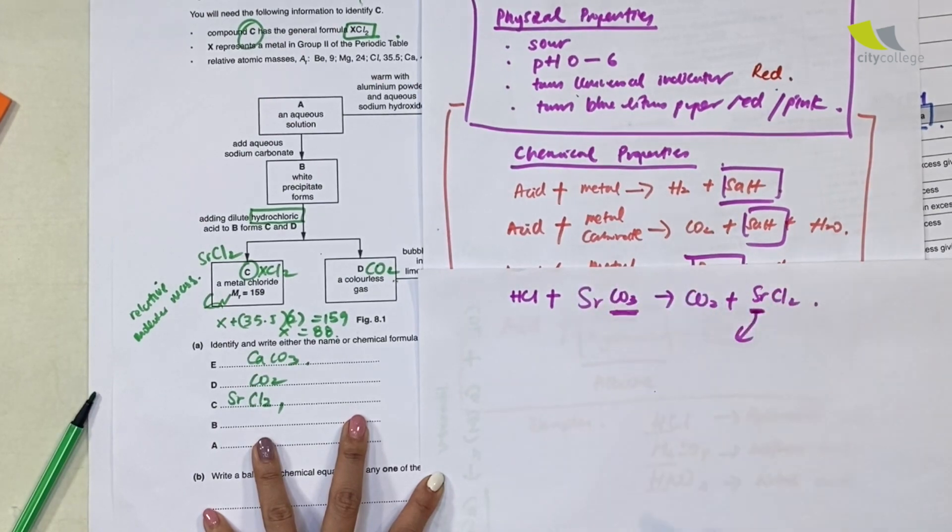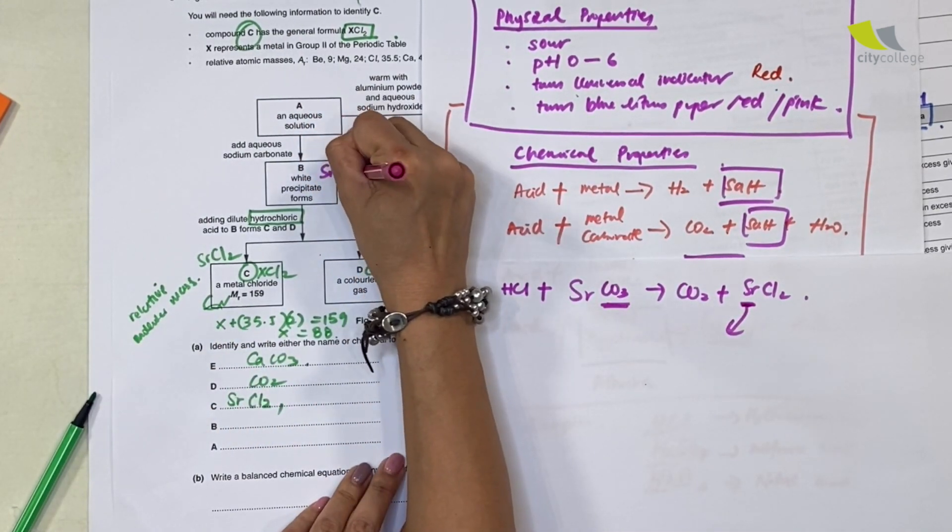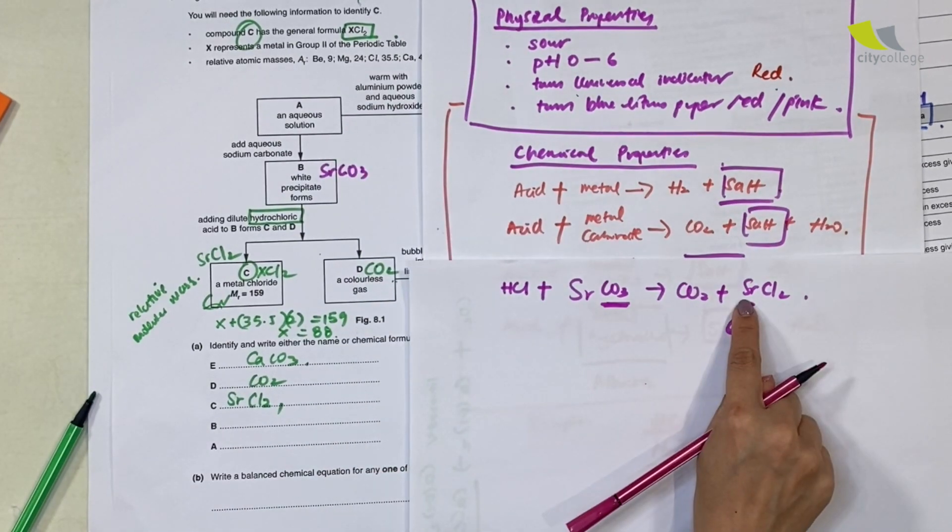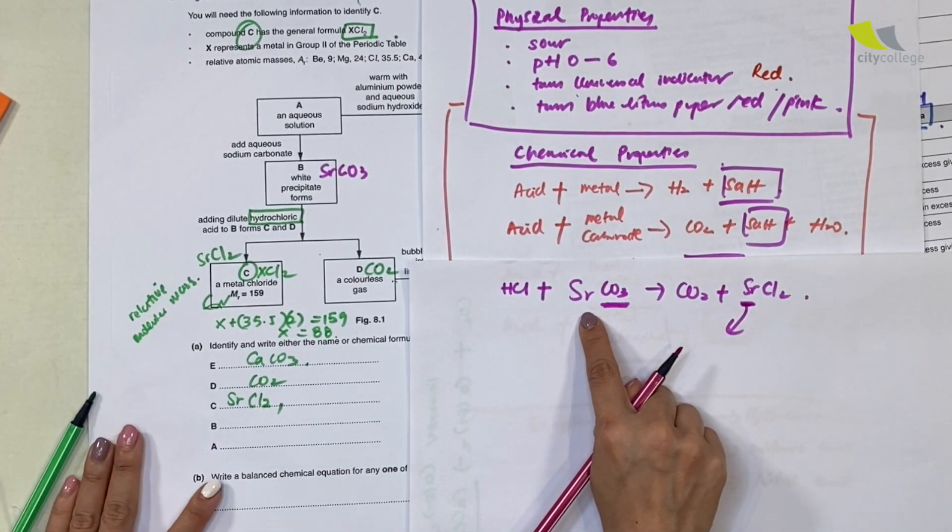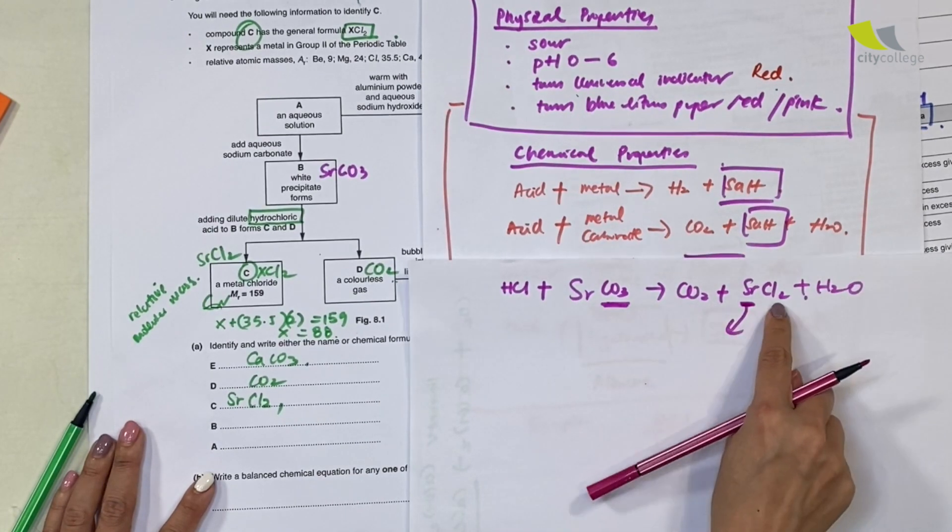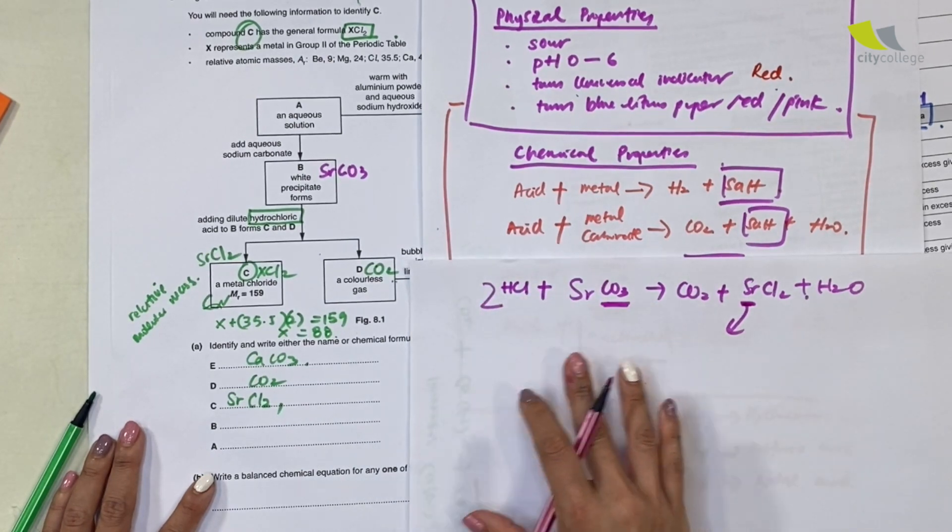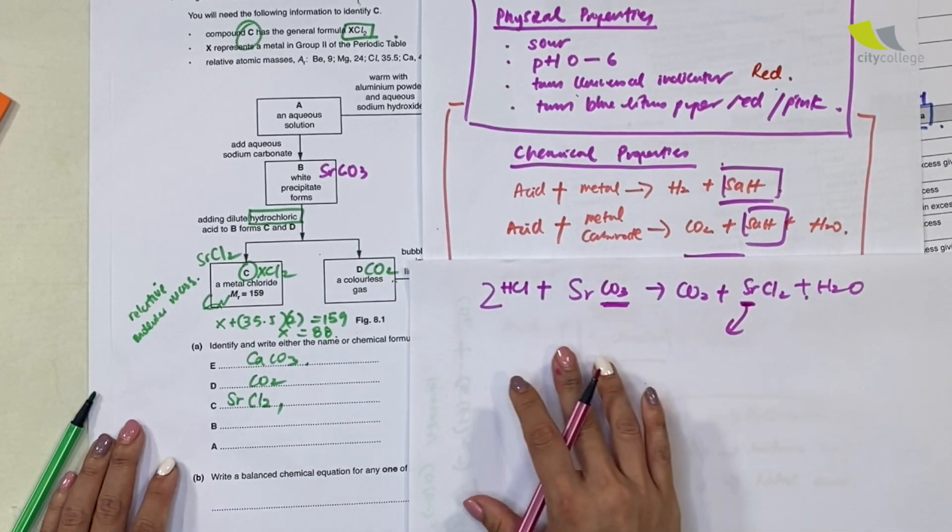So my B is my metal carbonate. Which metal carbonate is this? If my salt is SrCl2—since I know that the acid here is HCl, I'm going to write it at this portion so that everybody can see—it must be a metal carbonate. I know it's carbonate. Which metal carbonate?